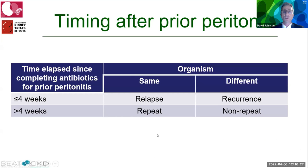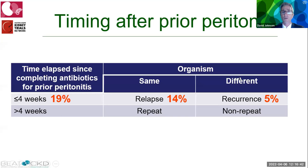Different types of peritonitis are classified according to time elapsed since completing antibiotics for a prior episode — the cut-point being ≤4 weeks versus >4 weeks — and whether the organism is the same or different. Overall, up to one in six peritonitis episodes result in relapse with the same organism within four weeks, and approximately 5% involve recurrent peritonitis.